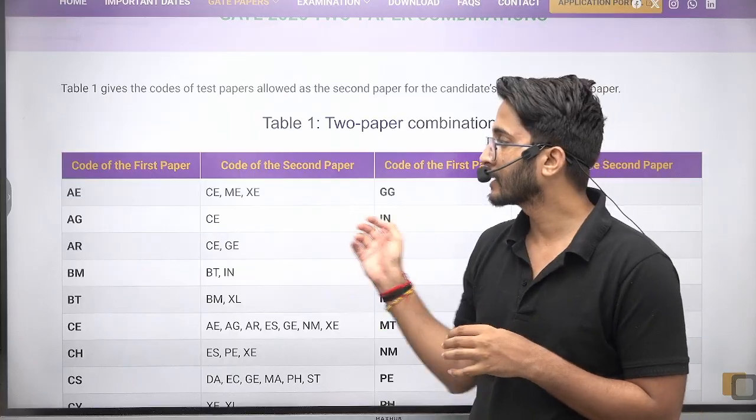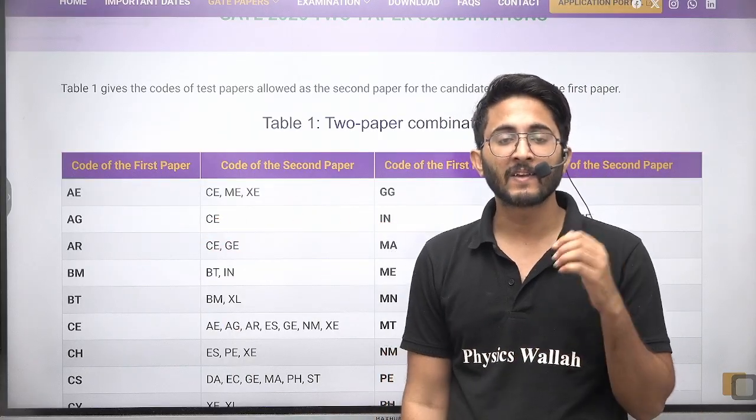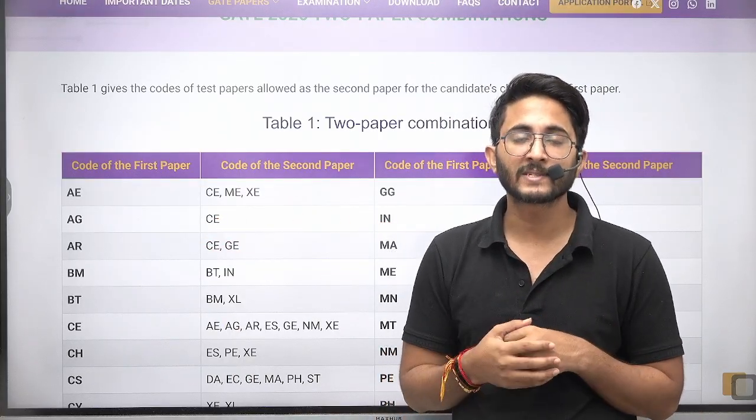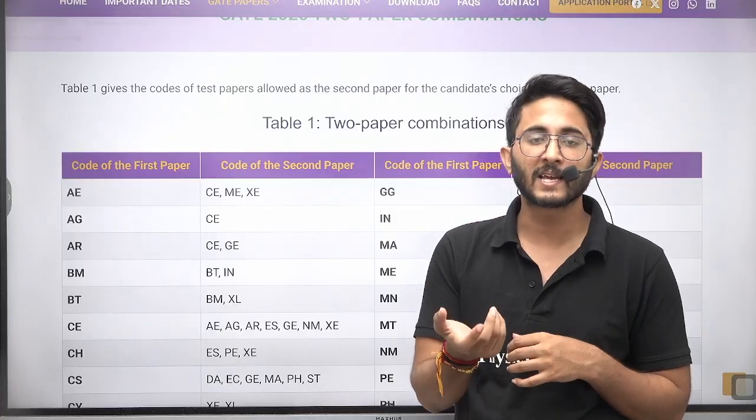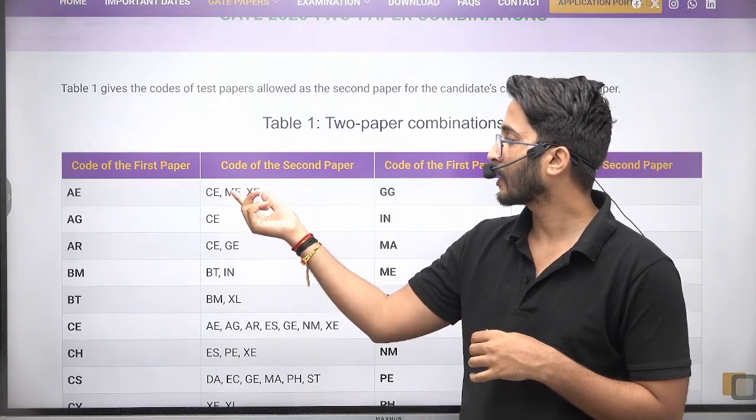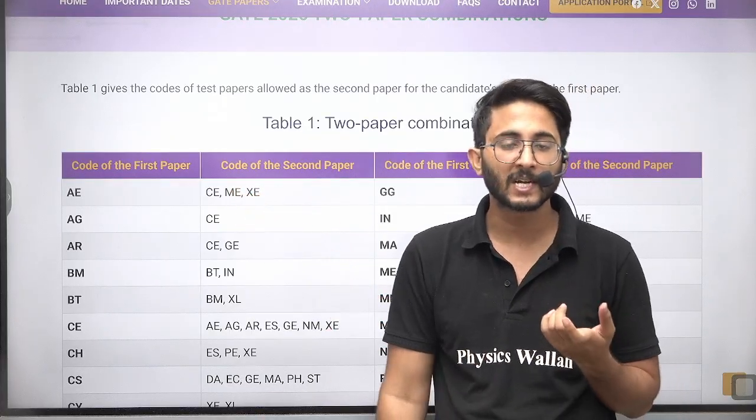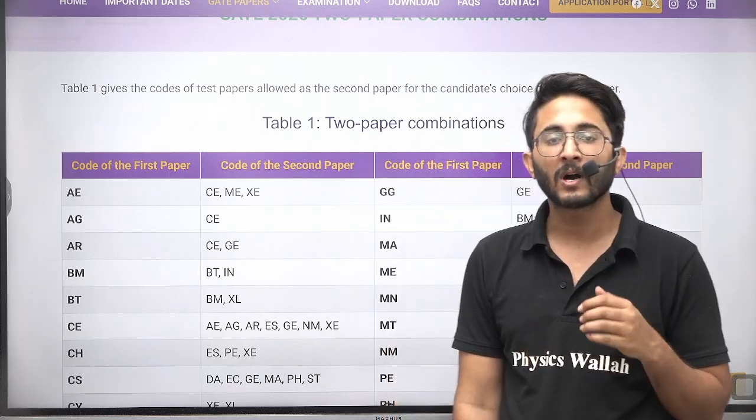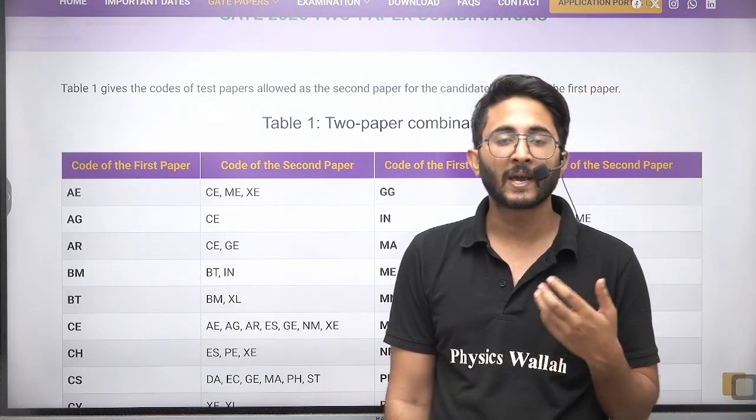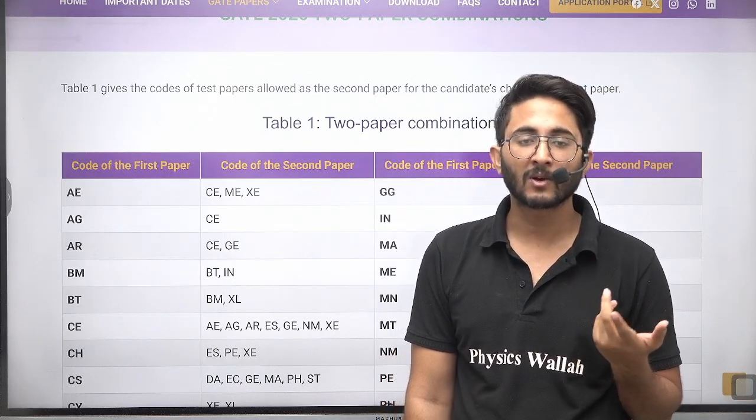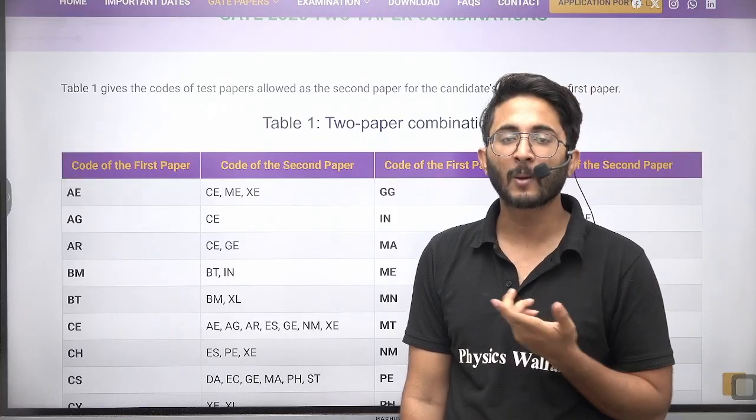For an example, if you are choosing the first subject AE, then they will ask you if you want to appear in second paper or not. Then if you click yes, then the second paper combinations available, you can choose any of this subject as a second paper. If you are not willing to appear in the two papers, then you can go with the one paper itself. It's not compulsory to appear in the two papers.